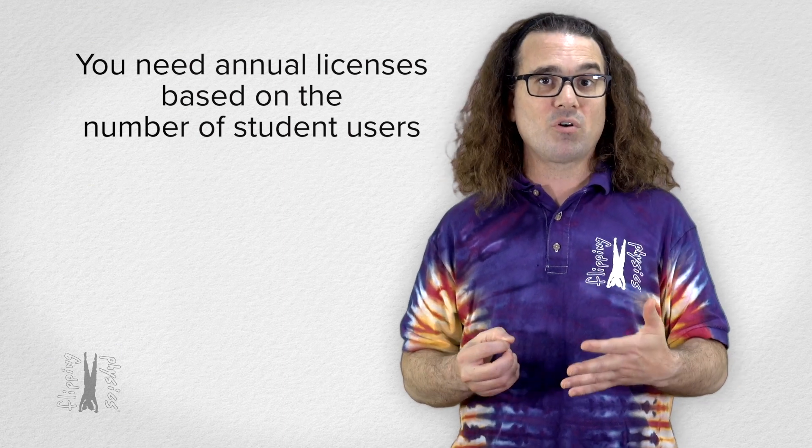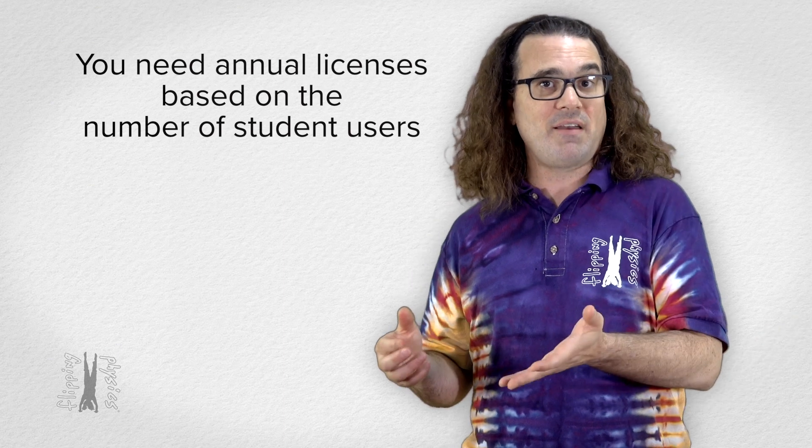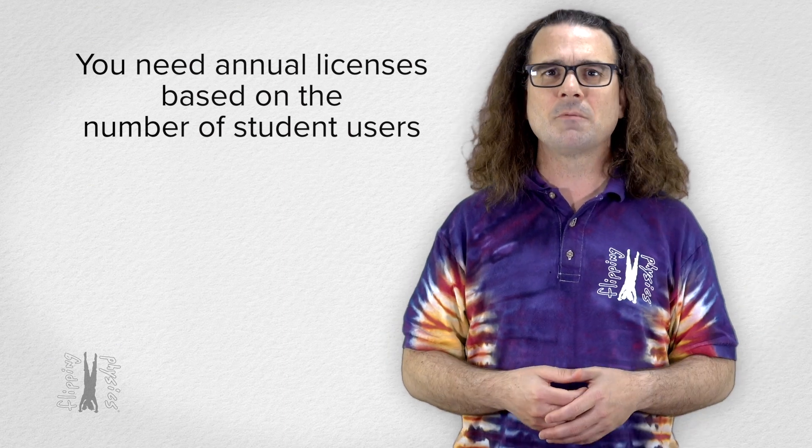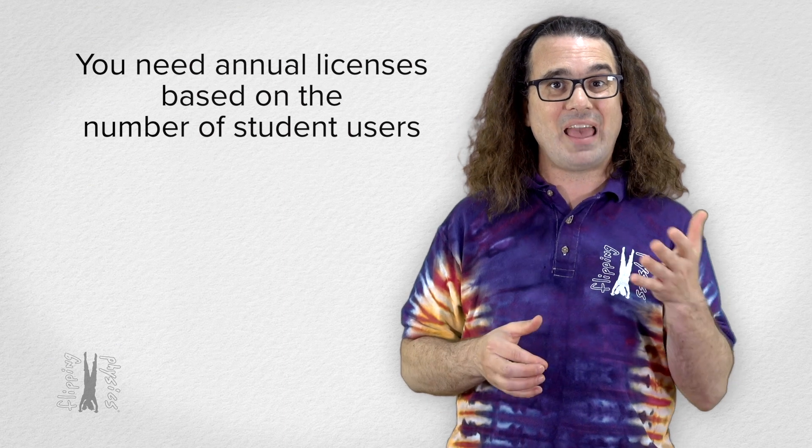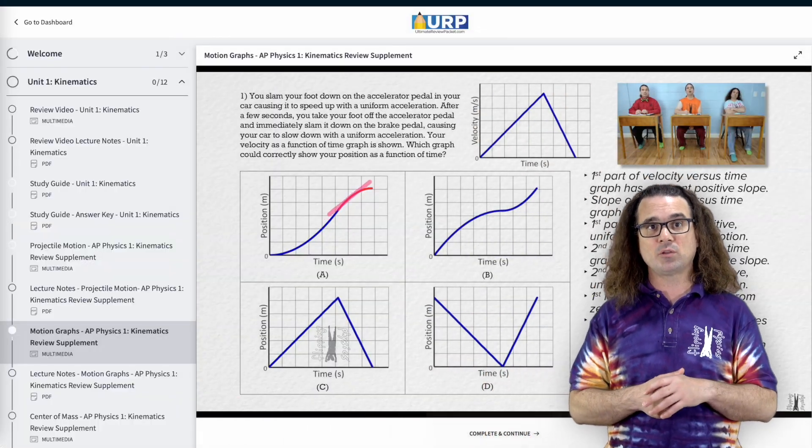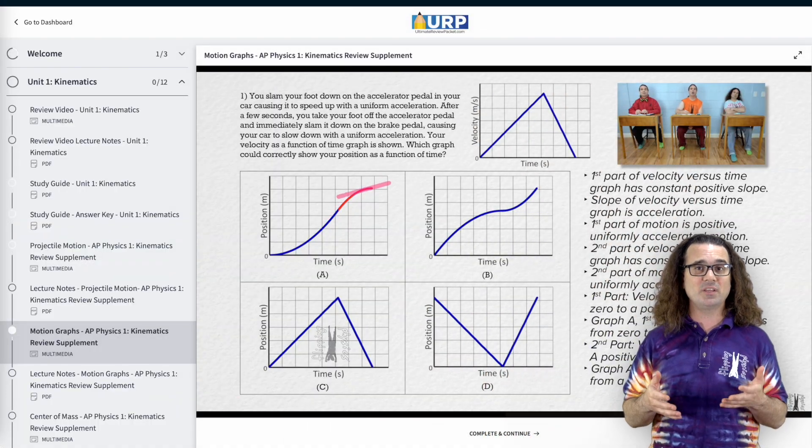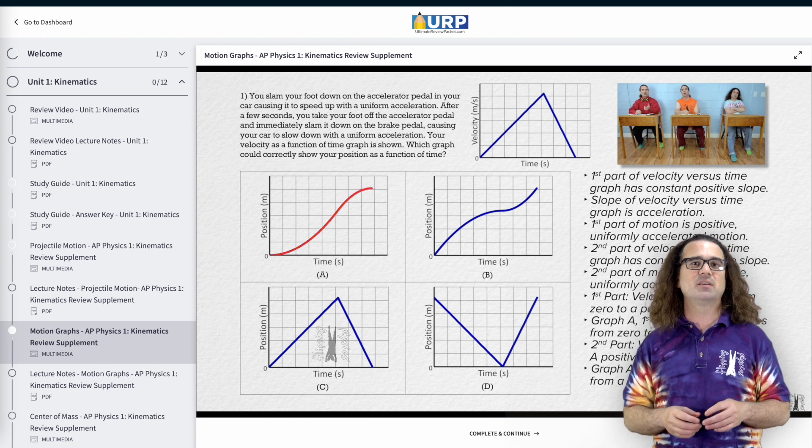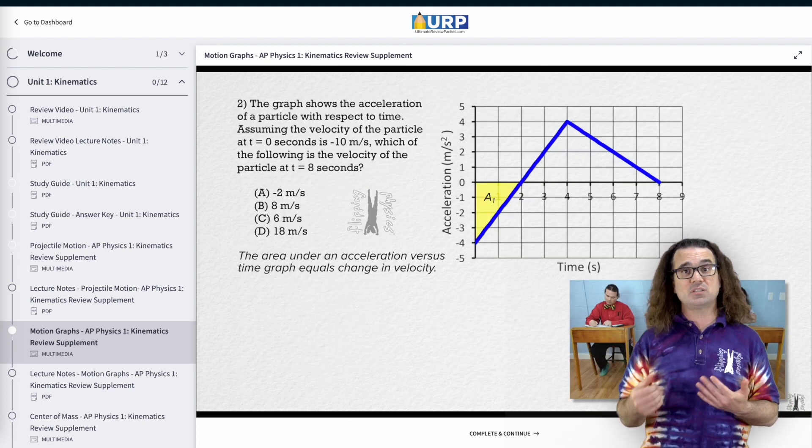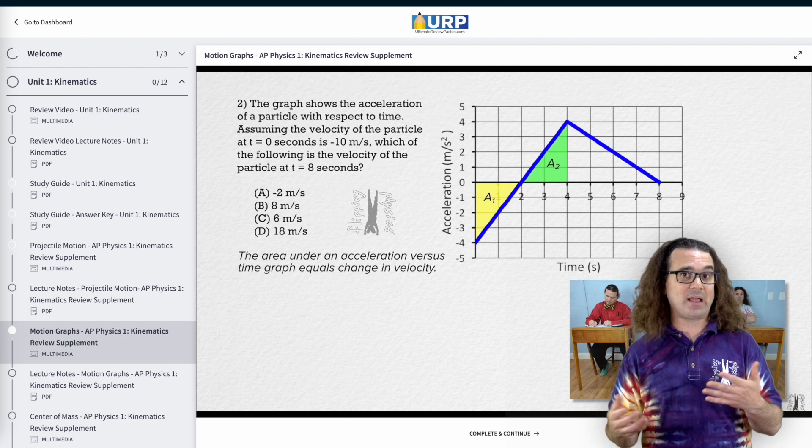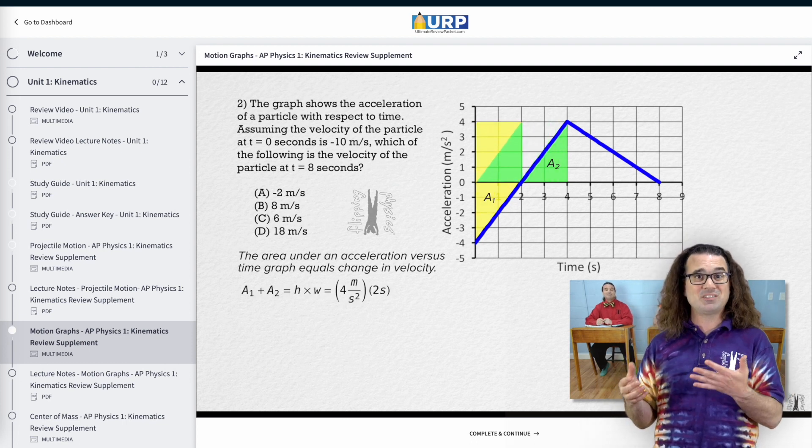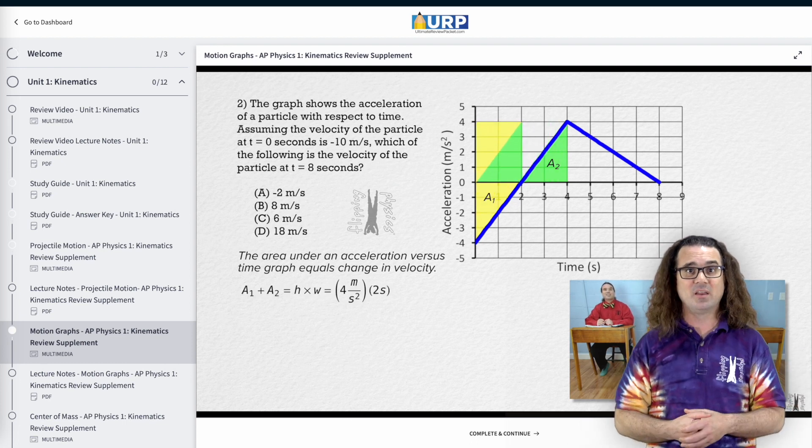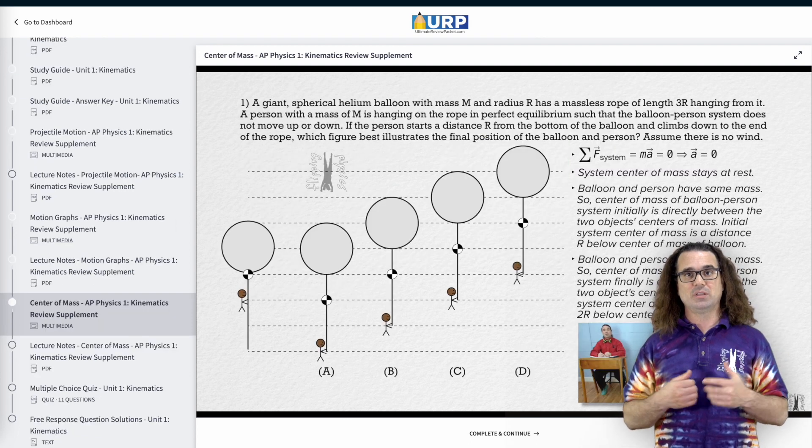If you place a bulk order for 25 students, you will receive 25 codes for your 25 students. Those licenses will allow you to use everything in my AP Physics 1 Ultimate Review Packet during the entire school year ending on July 1st. And if you want to use the study guides, supplementary videos, practice multiple choice problems, free response questions, solutions, or table of friends during the next school year, you will need to get new licenses.